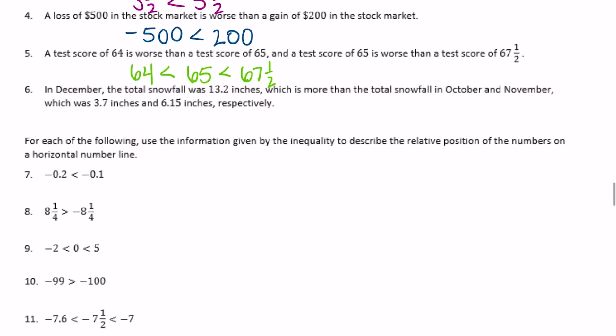In December, the total snowfall was thirteen and two tenths inches, which is more than the total snowfall in October and November — three and seven tenths inches and six and fifteen hundredths inches, respectively. So thirteen and two tenths is greater than six and fifteen hundredths, which is greater than three and seven tenths.